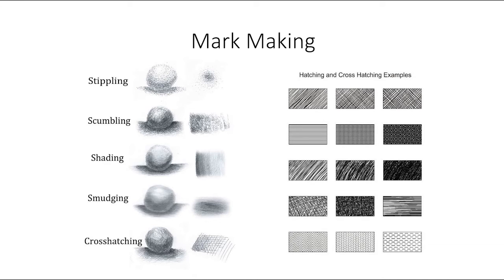Cross-hatching is overlaying lines on top of each other. The closer together they are, the darker the tone will be. The further apart the lines, the lighter it gets. You can still create dark-to-light tone by controlling how much pressure you put on the pencil when doing cross-hatching.